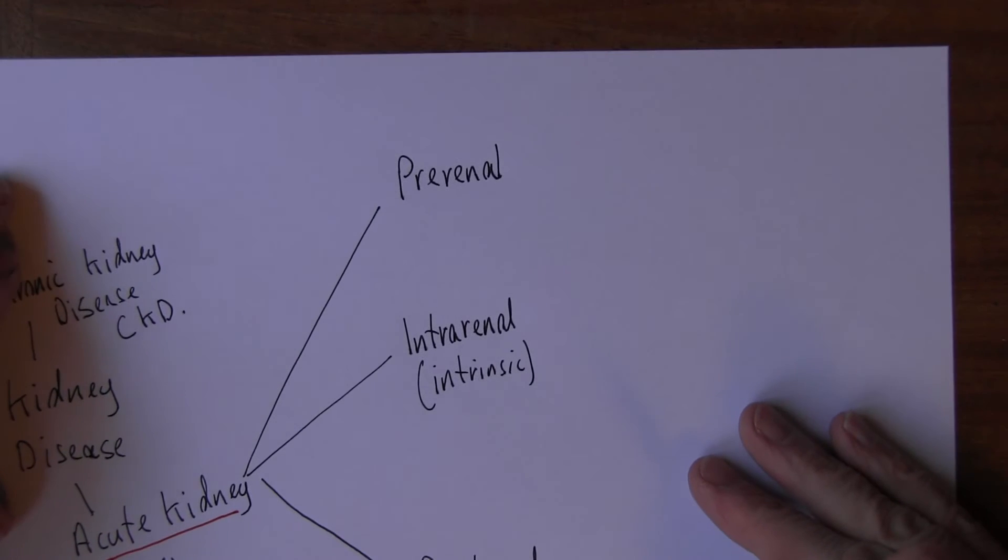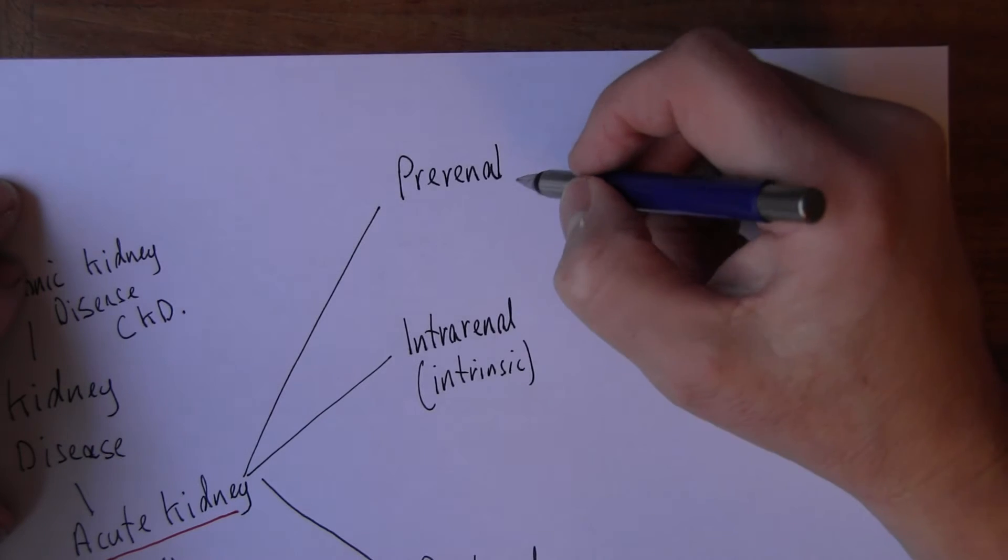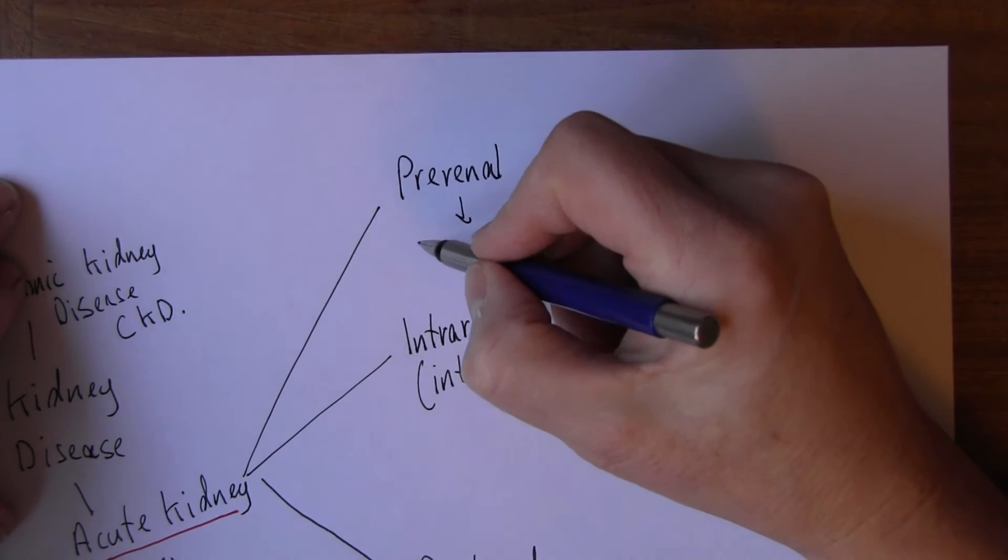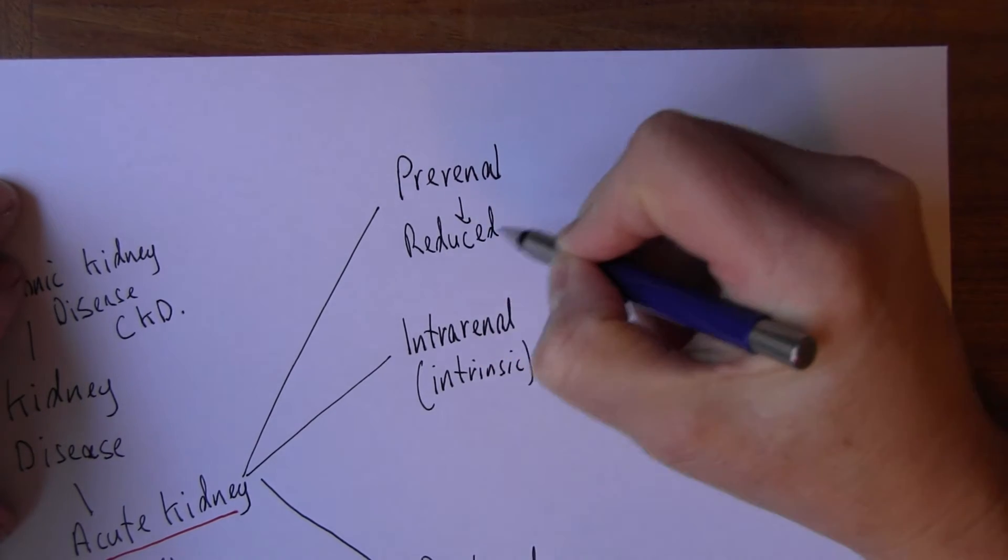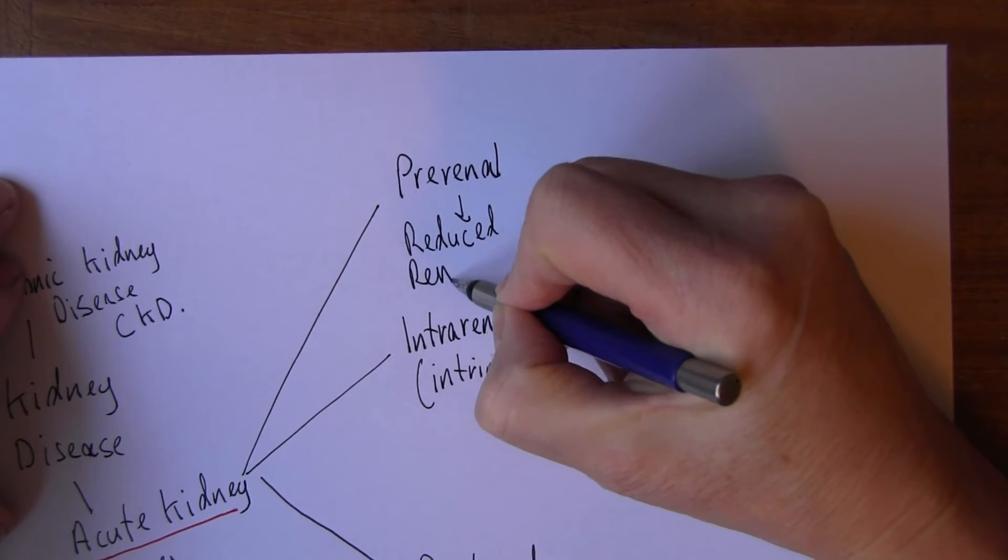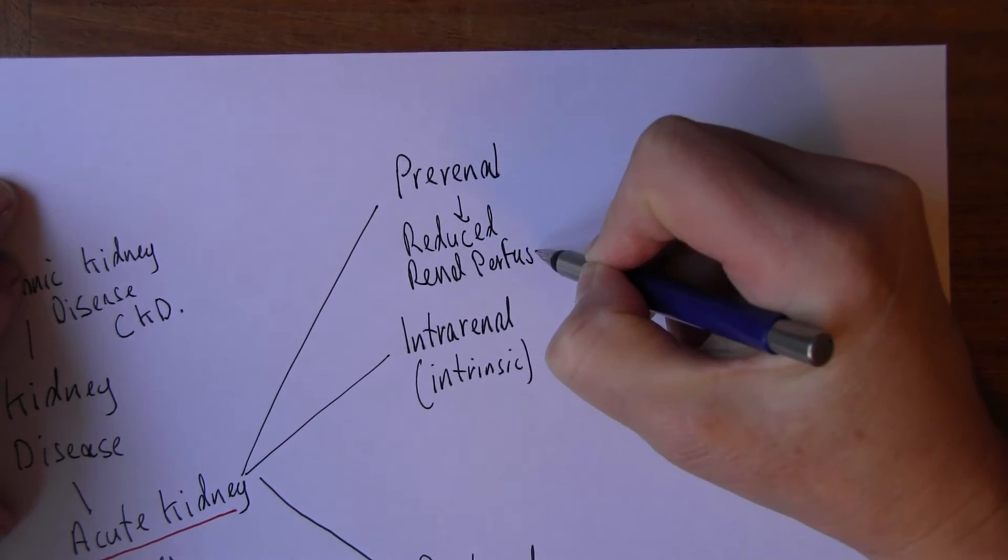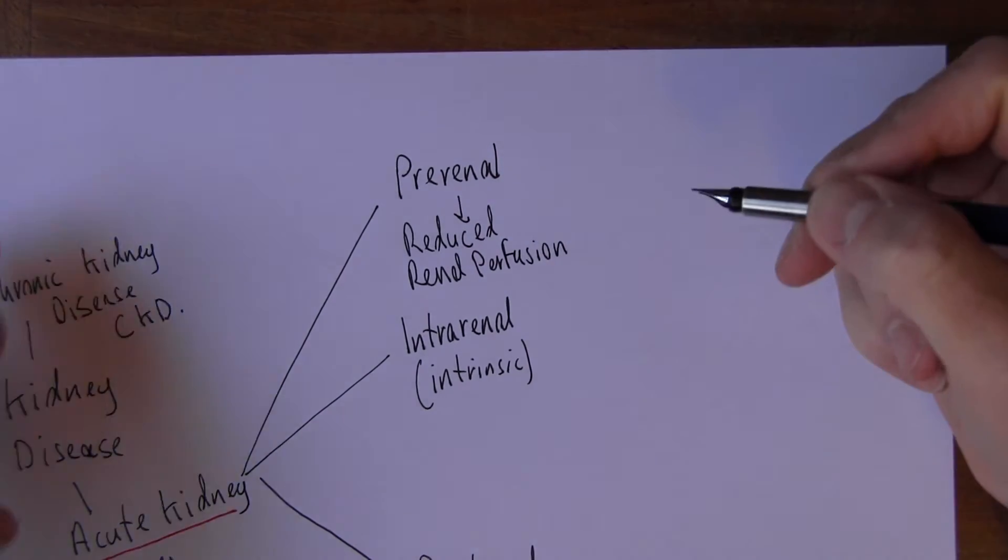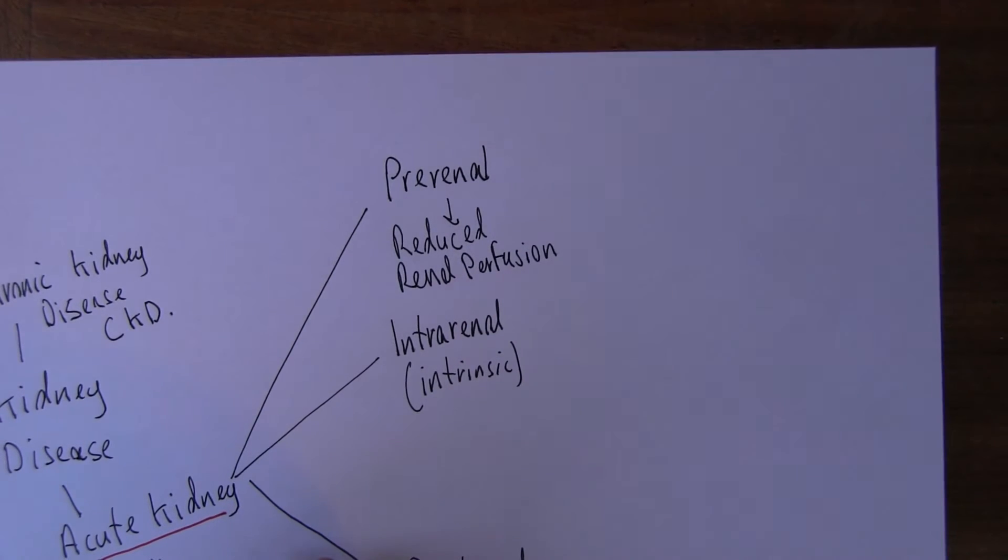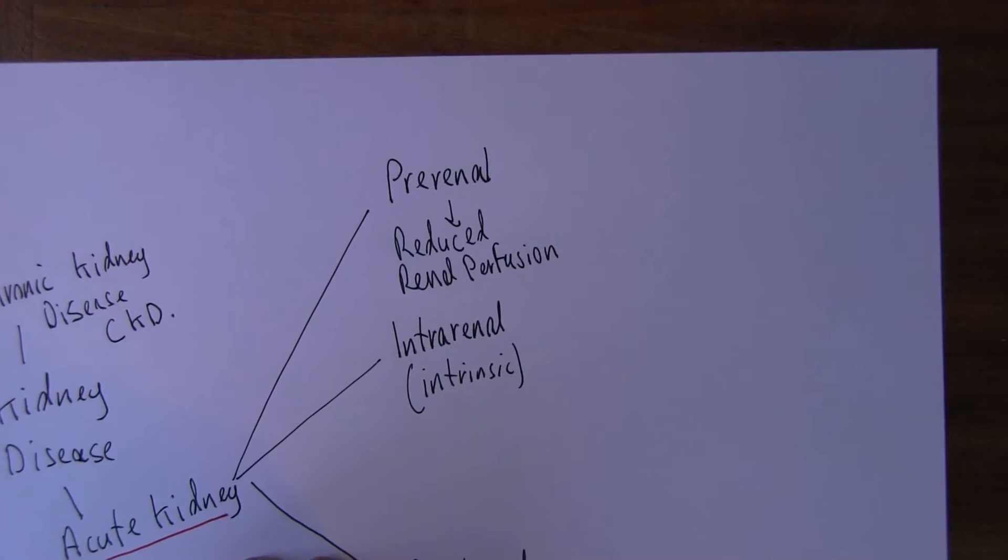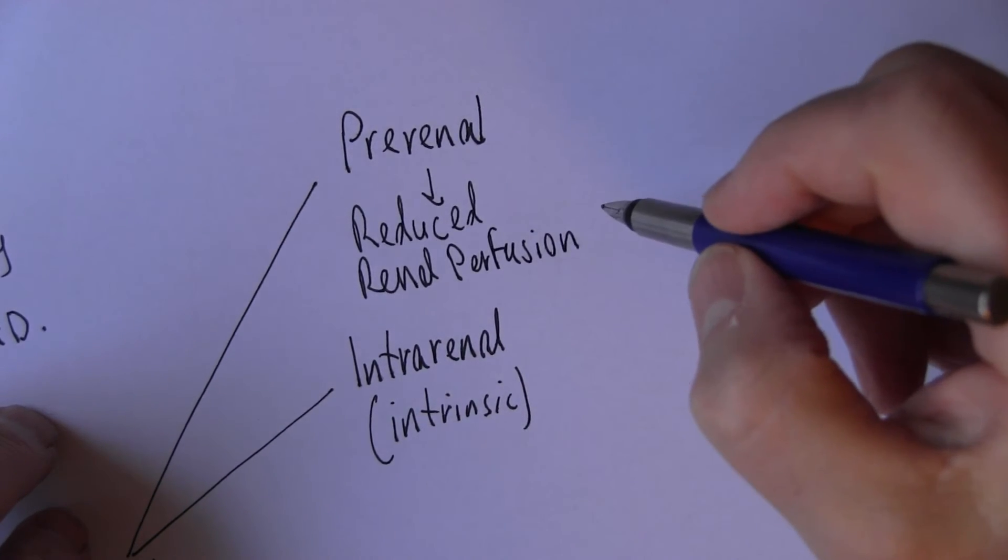Now we need to try and order the causes of this condition. So let's think about prerenal first of all, prerenal causes. Now this is caused primarily by reduced renal perfusion. Perfusion is the way that the blood flows through an organ, how it's perfused with blood.